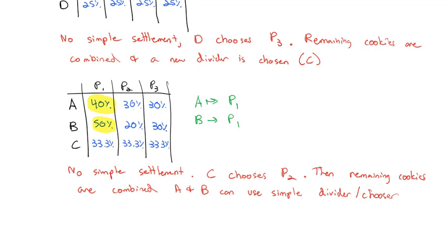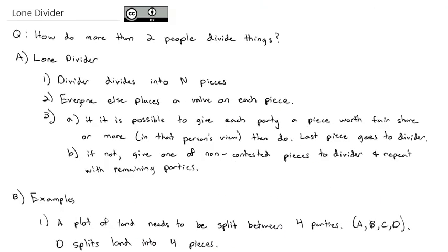So one way we can handle dividing things fairly among more than two parties is to use this lone divider method. The divider divides into n pieces, everyone places a value, and depending on whether a simple settlement is possible, we either divvy up the pieces or the non-contested piece goes to the divider and we repeat the process with the remaining parties. In the next video, we'll take a look at another way we can divide things fairly.